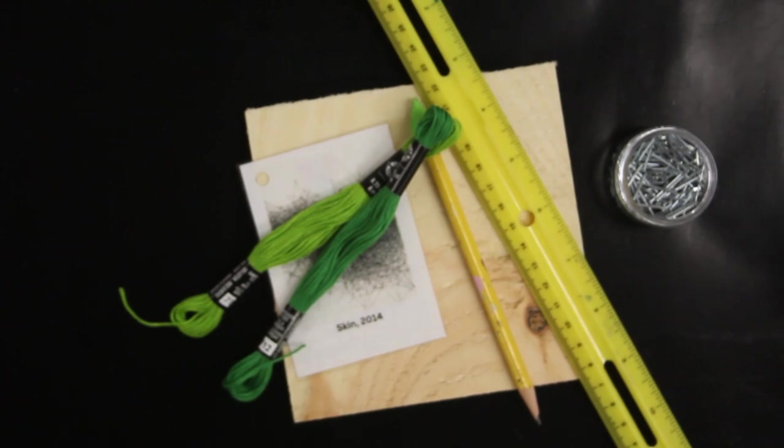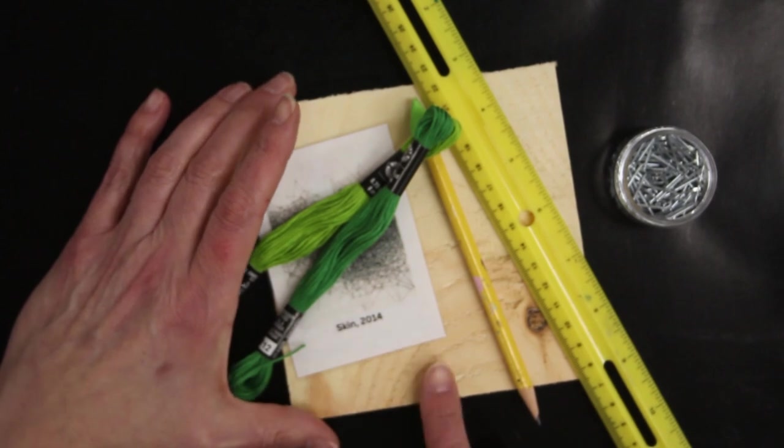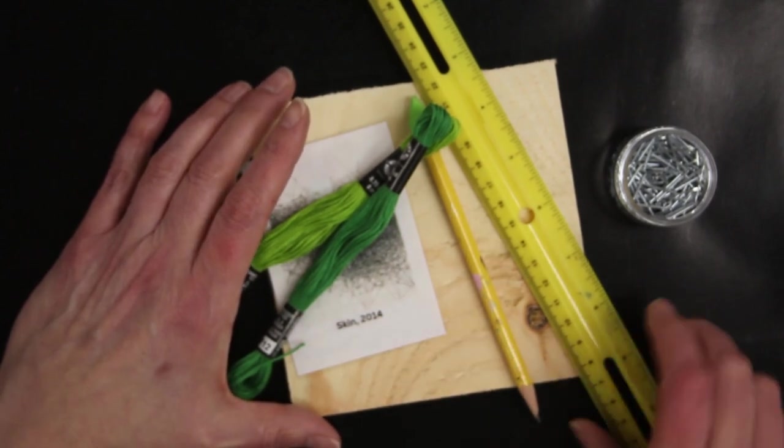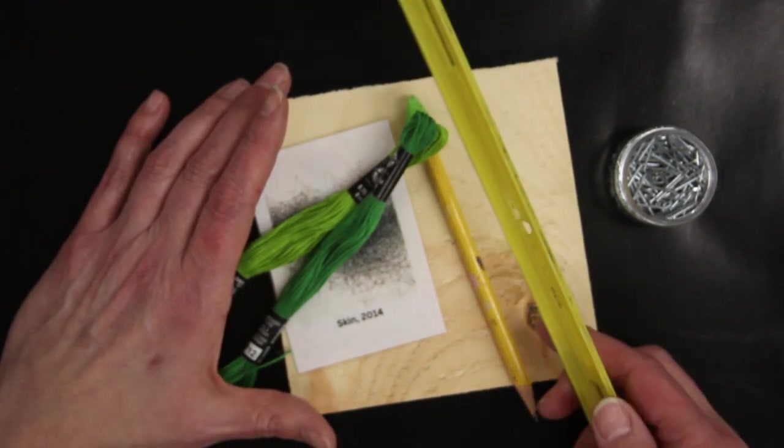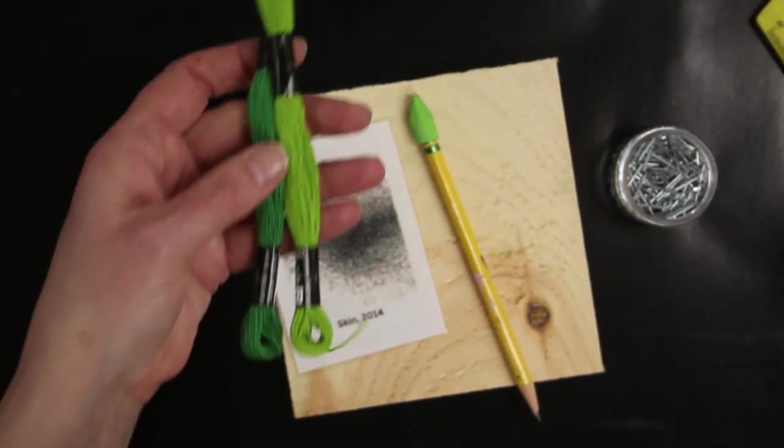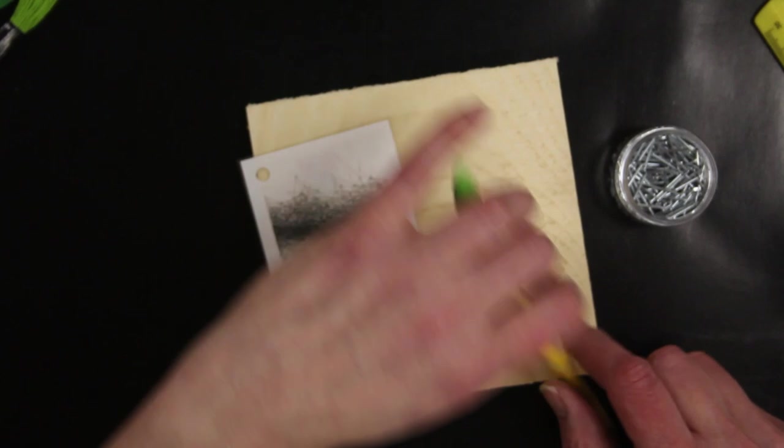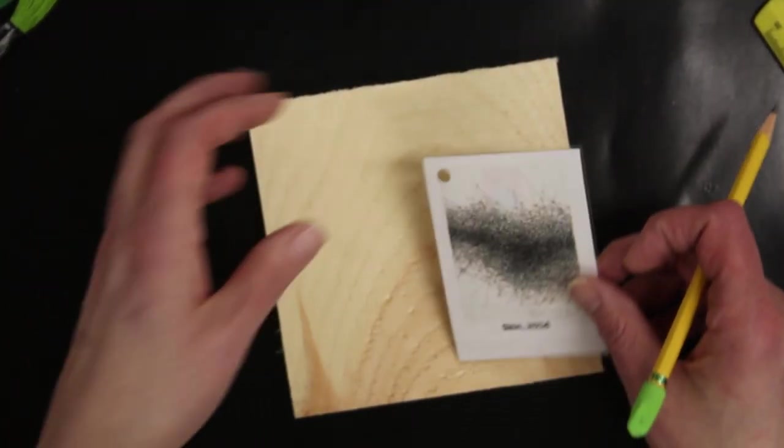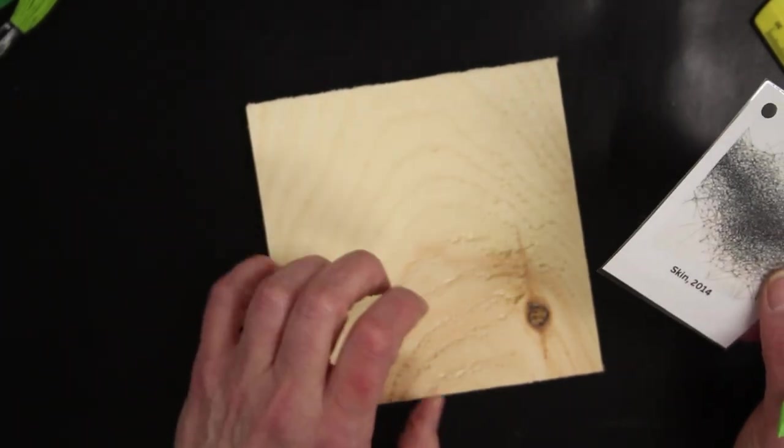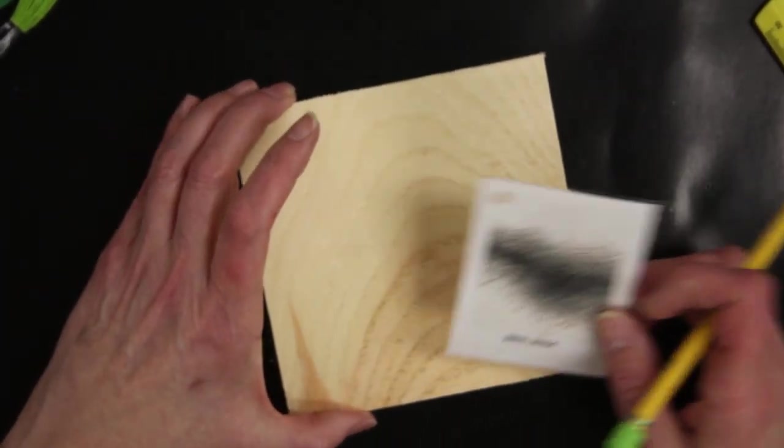Hi guys, welcome back to the studio. Today we are going to do another string art. We're going to be using our small piece of wood. It's five and a half by five and a half. You're going to need a ruler, some thread, a pencil, your nails, and your hammer of course.